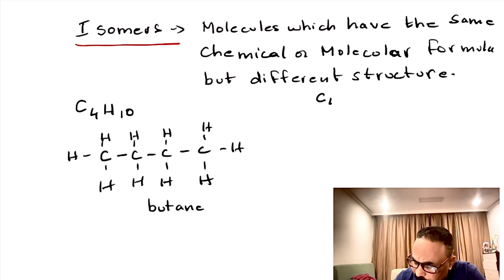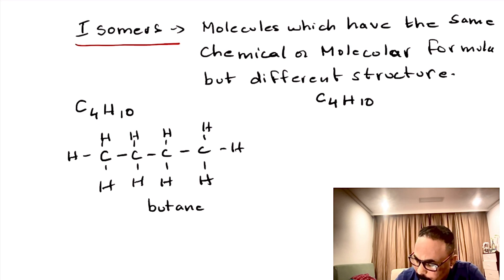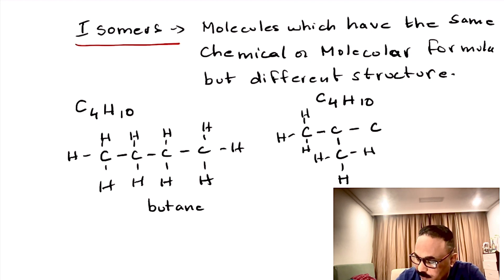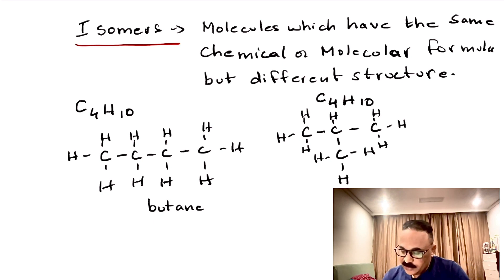Again here the formula will be C4H10. Now, 3 carbons will be in a straight row and 1 will be in the branch. This is the methyl group attached over there, and each carbon has 4 bonds. You have to be very careful not to skip any hydrogen. If you count: 3, 6, 7, 8, 9, 10 — 10 hydrogens and 4 carbons.